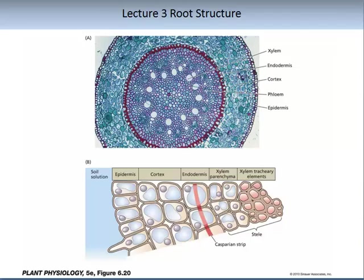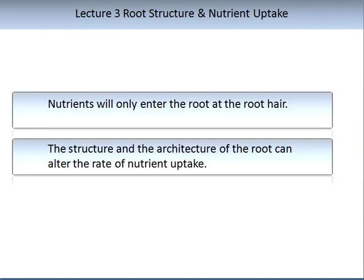From your DIY practicals, essential reading and Lecture 2, the following images of root structure should be familiar to you. Figure 1a is an image of the cross section of a root, while Figure B is a detailed concept drawing of the main structural components. You will note the epidermis, the cortex, the endodermis which contains the important Casparian strip which stops nutrient loss, and the stele where the xylem and phloem structures are located. Nutrients will only enter the root at the root hair, unless the root is very young where they may enter at the root tip. The structure and architecture of the root can alter the rate of nutrient uptake.